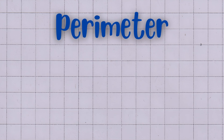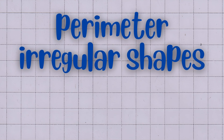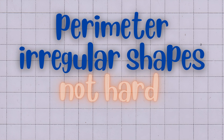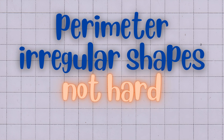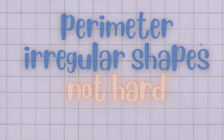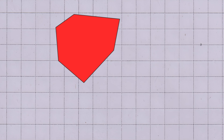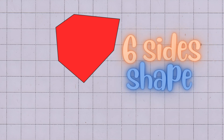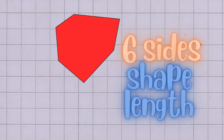Finding the perimeter of an irregular shape is not hard, but a little bit of work. Let's look at our last example. An irregular hexagon is a six-sided shape where all the sides can have different lengths.